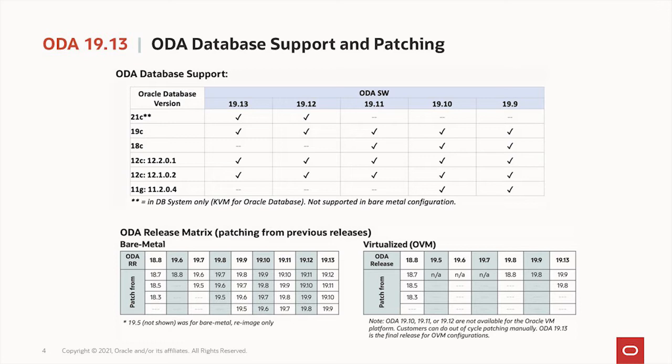We've put together these charts to show the database support transition — what ODA software supports which database. We do not ship Oracle Database 11G clones starting with 19.11, and we stopped shipping the 18C clone with 19.12. So you cannot provision an 18C database starting with 19.12. The bottom rows show how you patch to the latest ODA version, 19.13. We typically recommend you stay within the four previous releases for direct patching.